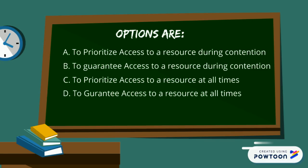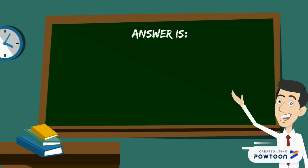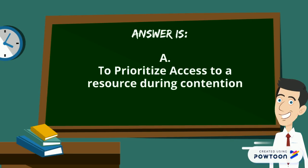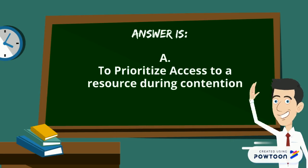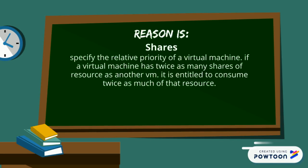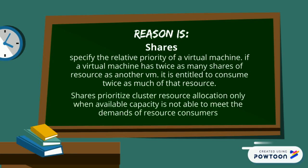The answer is: to prioritize access to a resource during contention. The reason is that shares specify the relative priority of a virtual machine. If a virtual machine has twice as many shares of a resource as another VM, it is entitled to consume twice as much of that resource. Shares prioritize cluster resource allocation only when available capacity is not able to meet the demand of resource consumers.